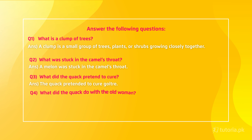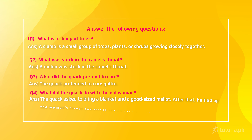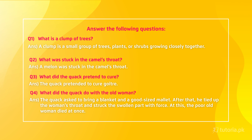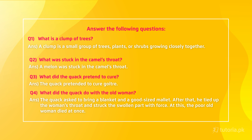The next question is: What did the quack do with the old woman? The quack asked to bring a blanket and a good-sized mallet. After that, he tied up the woman's throat and struck the swollen part with force. At this, the poor old woman died at once.